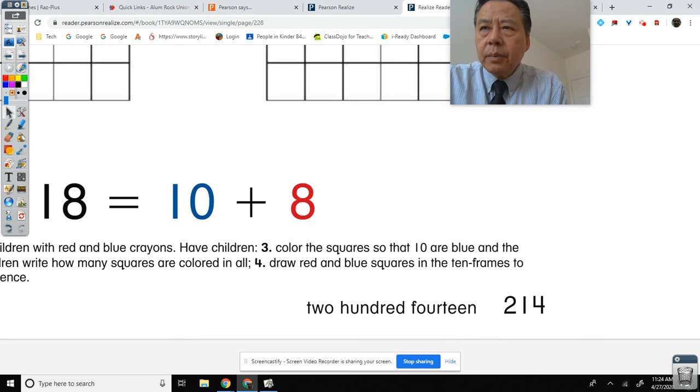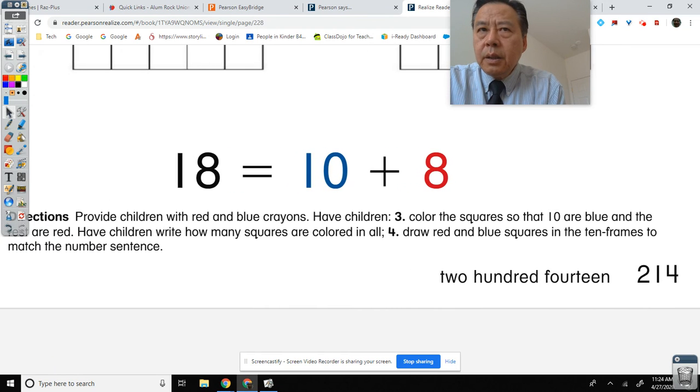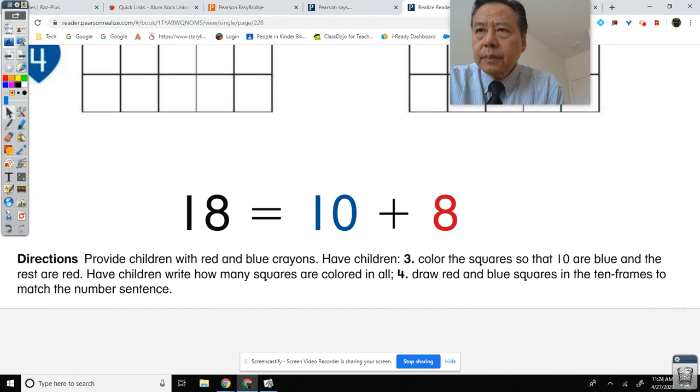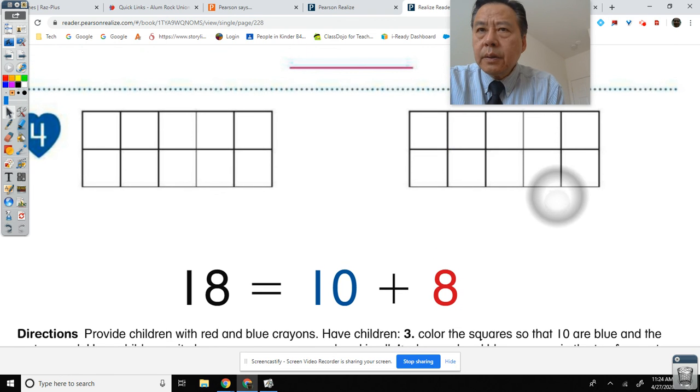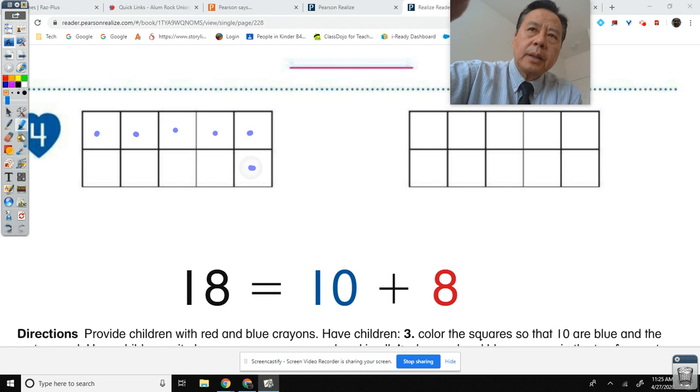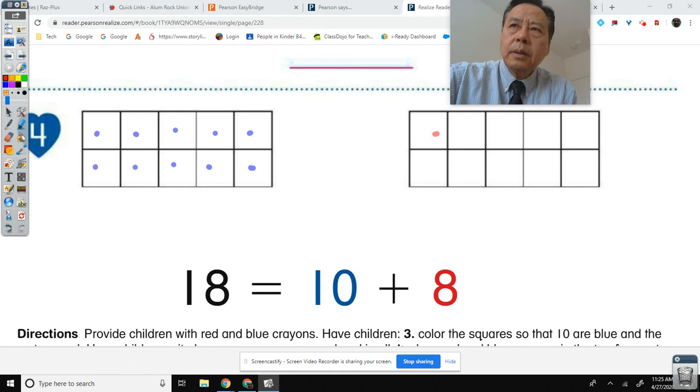Let's read this. It says draw red and blue squares in the 10 frames to match the number sentence. All right, so it's 18 equals 10 blue and 8 red. So this is going to draw, if you don't have the colors you just do a pencil. 10: 1, 2, 3, 4, 5, 6, 7, 8, 9, 10. And red 8: 1, 2, 3, 4, 5, 6, 7, 8. So that's how you represent 18 equals 10 plus 8.